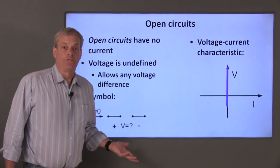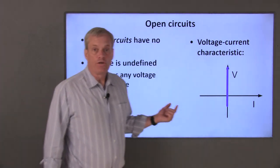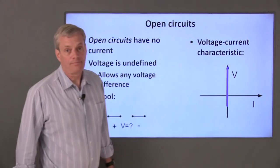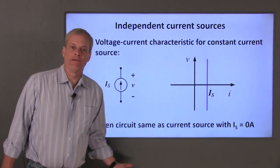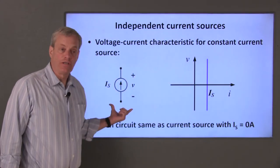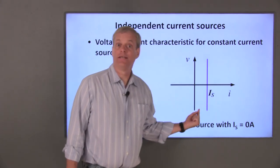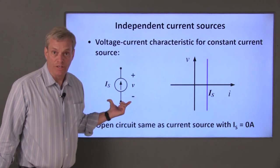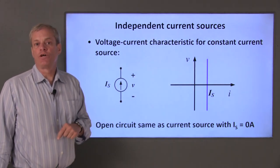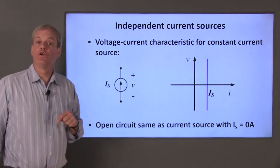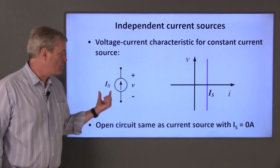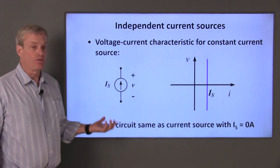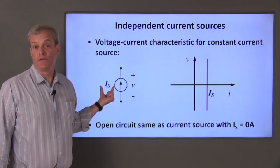Since current is zero and voltage can be any value, the voltage-current characteristic for an open circuit is a vertical line at I equals zero. The voltage-current characteristic for an ideal current source is also a vertical line, where the current is I sub S for any value of voltage. This is the same curve as for an open circuit when the current source is zero — an open circuit is mathematically the same as an ideal current source with I sub S equal to zero amps.